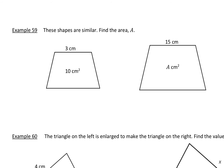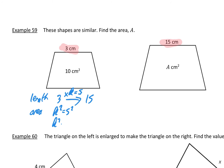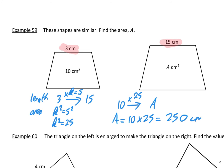These shapes are similar — find the area of A. First, I can see that 3 is a length on the small shape and it goes to 15 on the big shape. So for length, 3 goes to 15 by multiplying by k equal to 5, because 3 times 5 gives 15. For area, k squared is 5 squared which is 25. So to get from the small area of 10 to area A, I multiply by 25: A equals 10 times 25, which is 250 cm².